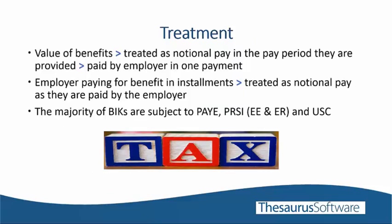The most common Benefits in Kind provided by employers to employees, which are subject to PAYE, PRSI and USC, are: company vehicles — cars and vans — medical insurance, preferential loans given at a reduced rate or free of interest, and free or subsidised accommodation. PAYE, PRSI and USC due on benefits must be collected by the employer through the operation of PAYE on the taxable value. Today we will also cover some exempt benefits and payments that can be made tax-free.